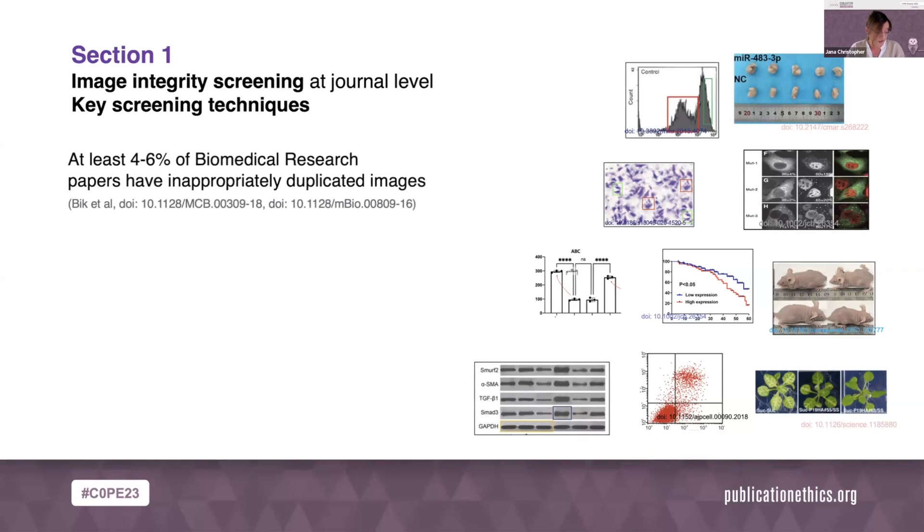The widely accepted estimate, based mainly on two studies by Elizabeth Bick, is that at least 4% to 6% of published biomedical research papers have inappropriately duplicated images. More recent studies suggest an even higher rate in problematic papers, especially in certain areas of research, and prevalence also differs greatly between journals, which appears to be somewhat linked to watchfulness and editorial rigor.